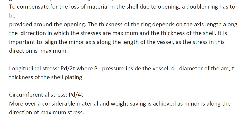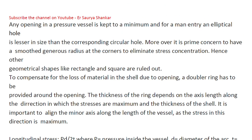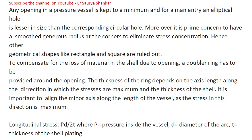To summarize: rectangular or square shapes are avoided because stress concentration at corners will be more — we want a smooth generous radius. Circular takes more area compared to elliptical, so we keep it elliptical. For the elliptical opening, there is a loss of material, so to compensate for that we provide a doubler ring, also known as a compensation ring. The area of the compensation ring is calculated accordingly.